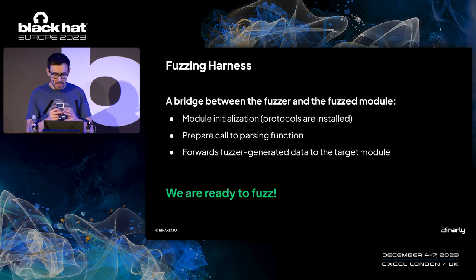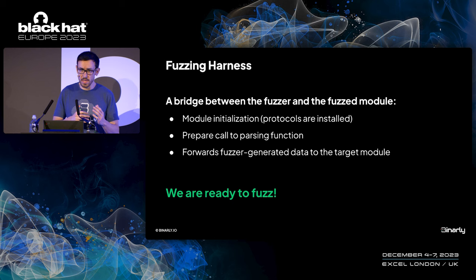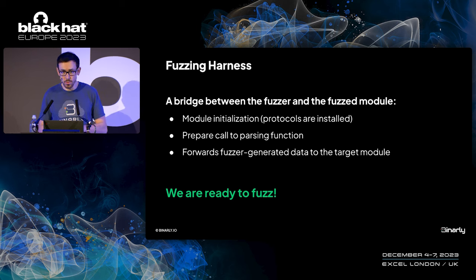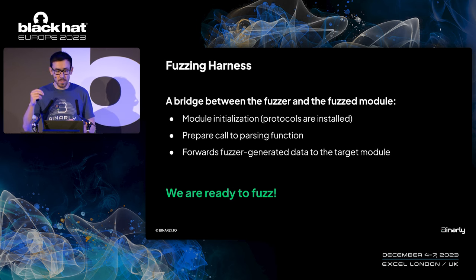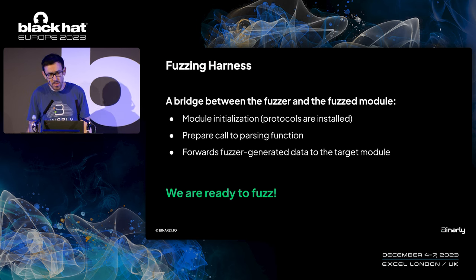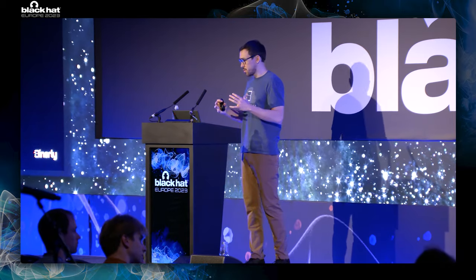The last component needed is the fuzzing harness, written for each identified parser. The harness acts as a bridge between the fuzzer and the fuzzed module — it brings the module to an initialized state, prepares the call to a parsing function, injects the fuzzer-generated data into the target module, runs the parsing function, and checks for crashes. With all these ingredients, we were ready to fuzz.